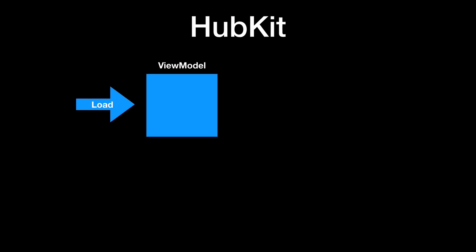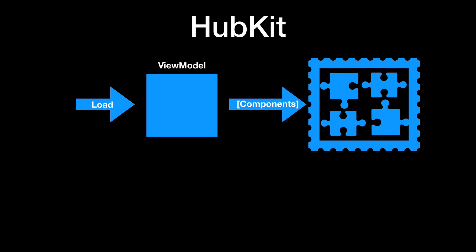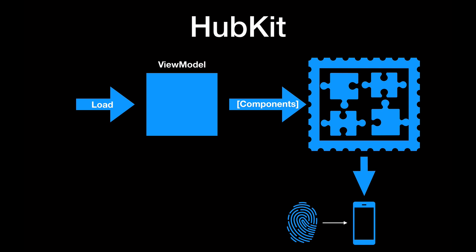The main idea is that the framework calls load on our view model, the view model does something, and eventually gives us back an array of components. Then the framework takes care of putting that on screen. The framework itself is basically one view controller with some logic and state management, and the other half is that the user interacts with UI elements and this interaction gets delegated into the component.